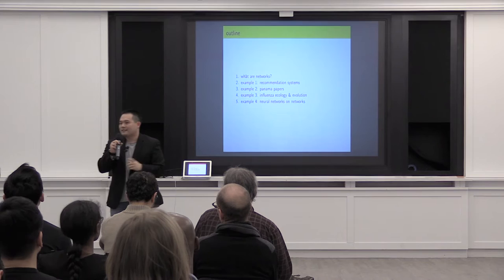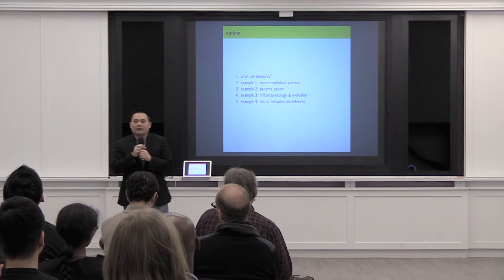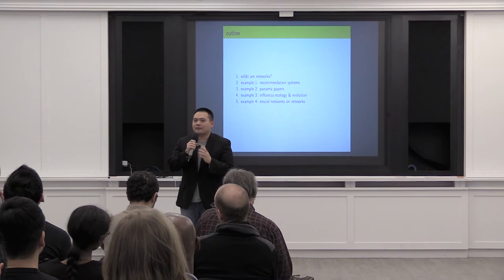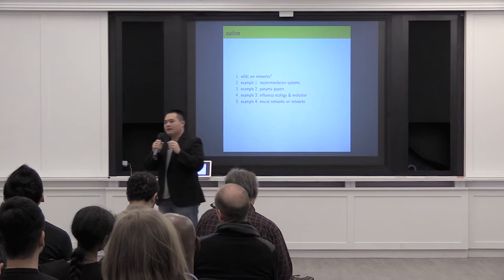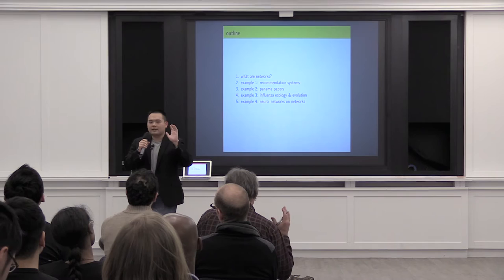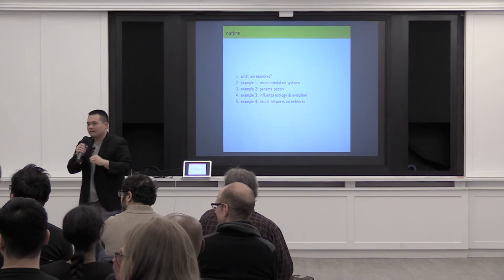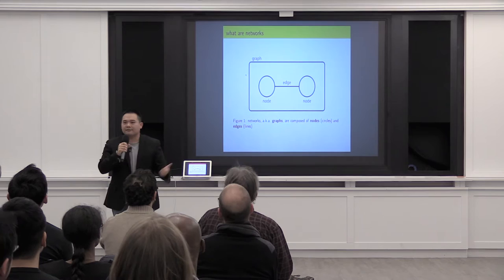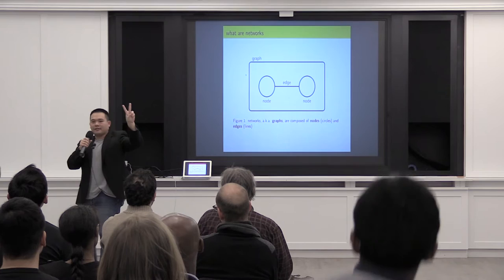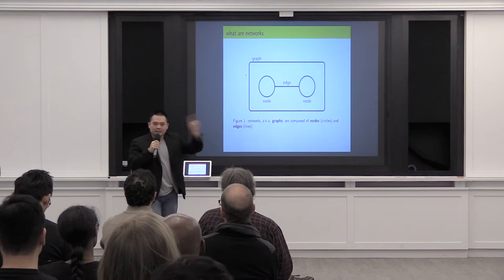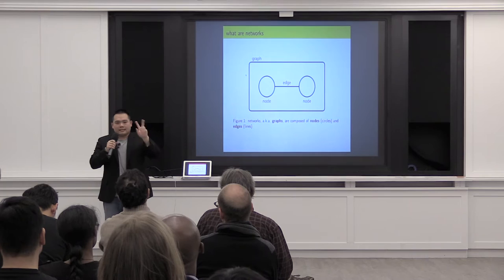First off, I'm going to share what the fundamentals of networks are. Then I'm going to share some non-intuitive ways in which networks have been used to solve cool problems. Before I go on, how many of you know a little bit about what networks are and can give me a definition? Amir, how about you? Exactly — Amir said this is a graph. A network is essentially defined as a graph, and a graph comprises two things: nodes, which are entities, and edges, which are relationships between those entities.